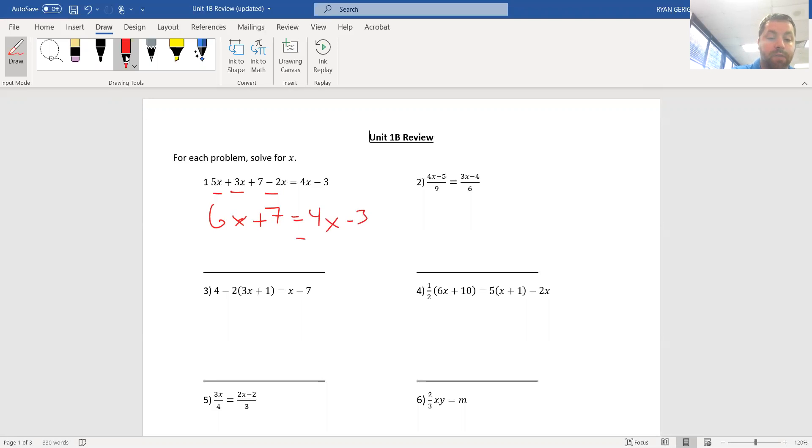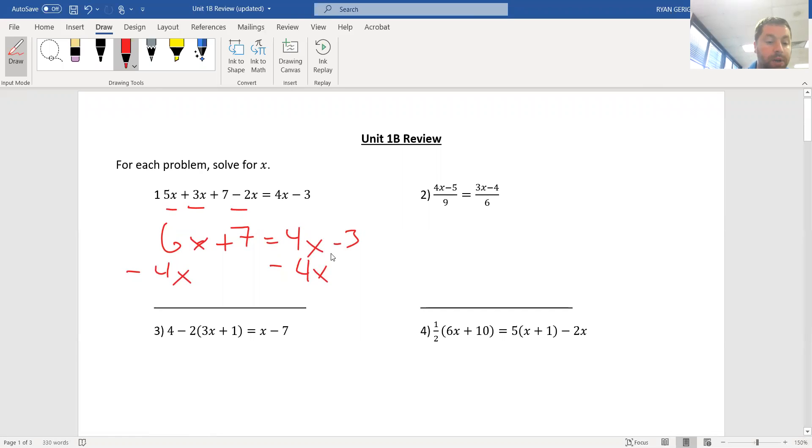Okay. If I move my 4x over to the other side, I'm going to take this over here. 2x plus 7 equals negative 3. Don't forget that negative there. Subtract 7, I get 2x equals negative 10. Negative 3 minus 7 is negative 10. Divide by 2, I get x equals negative 5.